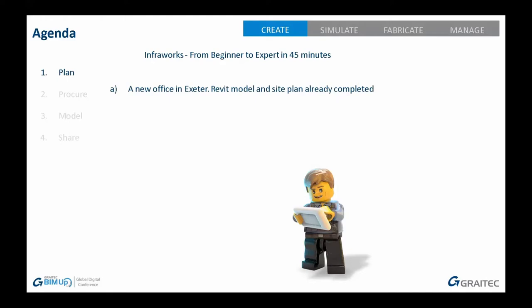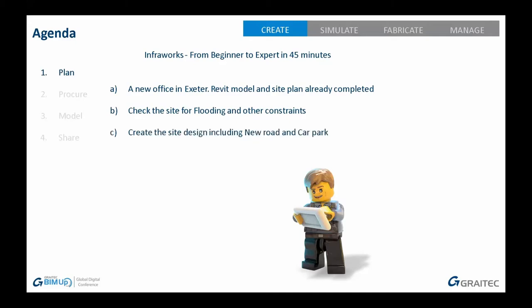We're going to do a new commercial office in Exeter. We've already got a Revit model completed by the architect, and we've also got a site plan from the architect. We need to check whether the site floods because it's near a river. We also need to design a car park with a new road for the office. I'm going to share it with colleagues and partners — we'll create a web link so people can view it in a web browser without downloading any software. Anybody can look at it, measure and mark up.